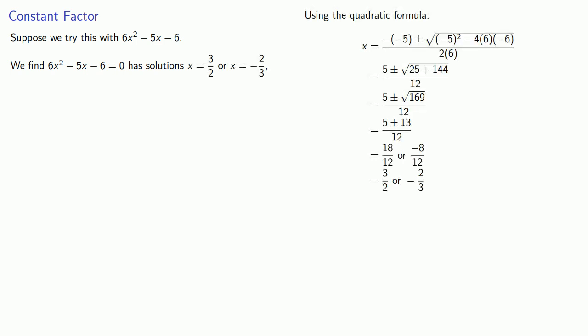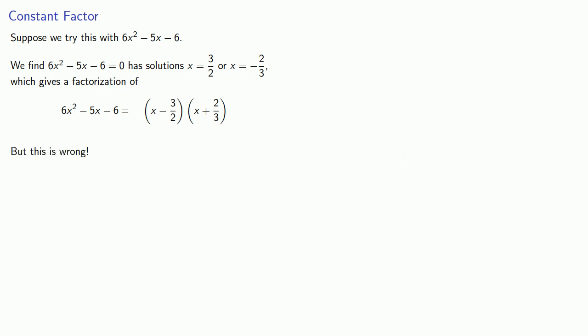There's one very important idea to keep in mind, which appears with the factorization of something like 6x squared minus 5x minus 6. So we find our equation 6x squared minus 5x minus 6 equals 0 has solutions x equals 3 halves or x equals minus 2 thirds. And as before, we might write down our factors x minus 3 halves, x plus 2 thirds. But this is wrong. The problem is that when we expand x minus 3 halves times x plus 2 thirds, the very first thing we get is an x squared, but we want to get a 6x squared.